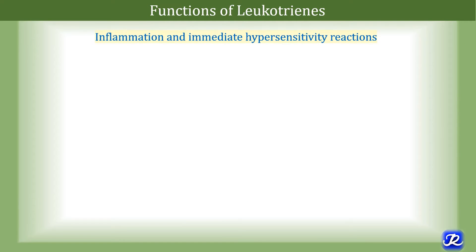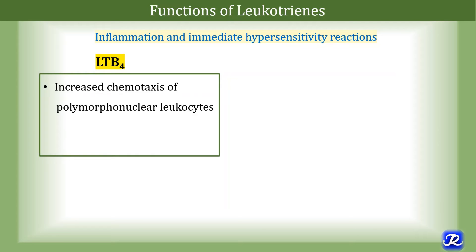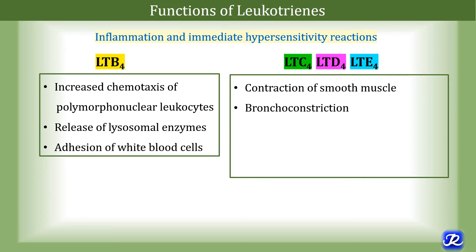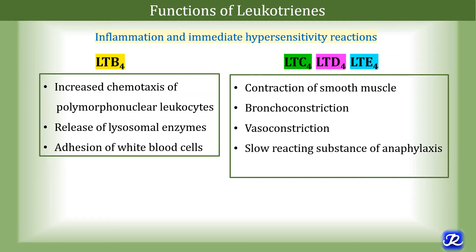Leukotrienes are involved in inflammation and immediate hypersensitivity reactions. Leukotriene B4 is involved in increased chemotaxis of polymorphonuclear leukocytes, which is important in inflammation. Chemotaxis is the directed migration of a cell in response to a chemical stimulus such as a growth factor. Other functions include release of lysosomal enzymes and adhesion of white blood cells. Leukotrienes C4, D4 and E4 are involved in contraction of smooth muscles — they cause bronchoconstriction and vasoconstriction, and are called slow-reacting substances of anaphylaxis, a severe potentially life-threatening allergic reaction occurring within seconds or minutes of exposure to an allergen. Leukotrienes are also involved in the pathophysiology of asthma, an inflammatory disease of the airways that results in difficulty in breathing.